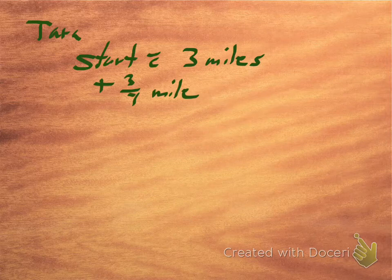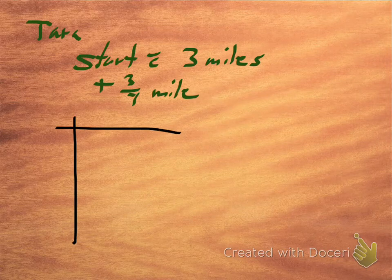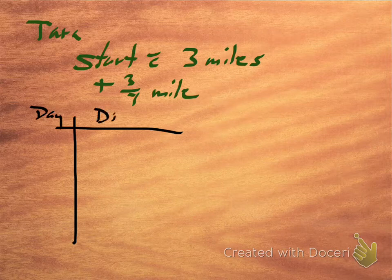Let's take a look. The question in the book asks us, at what point will Tara first run six miles or more? So this is a great problem to go ahead and set up a table. What we're going to do is put the days up here, and we're going to put the distance that she runs each day over here.